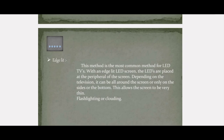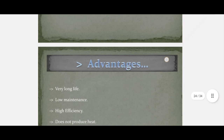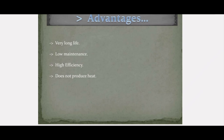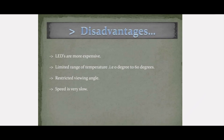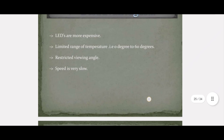The next configuration is direct light. This is how lower-end LED TVs are constructed. Similarly to the full array method, the LEDs are directly behind the screen, but these TVs are not very thin because of the space required behind the screen to diffuse the light over a large area. The main advantages of LEDs are very long life, low maintenance, high efficiency, and they do not produce heat. The main disadvantages are that LEDs are more expensive, limited to a temperature range of 0 to 60 degrees, have a restricted viewing angle, and low response speed.